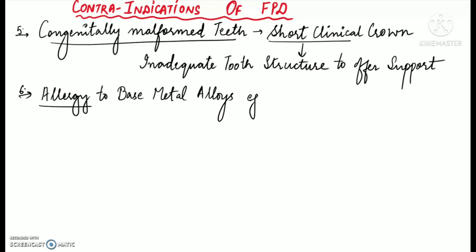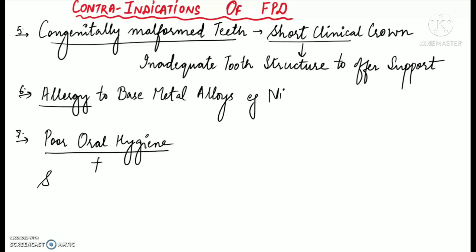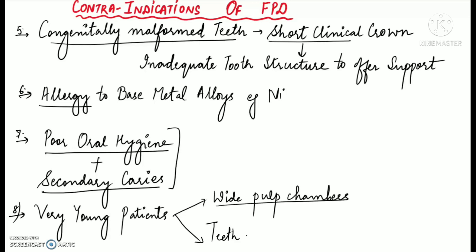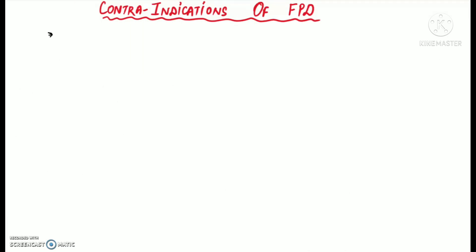Patients with poor oral hygiene and an increased risk for secondary caries are poor candidates for fixed partial denture. FPD is generally not indicated for very young patients as they have wide pulp chambers and teeth may not be fully erupted. FPD is also generally avoided in very old, mentally sensitive, and medically compromised patients who cannot cooperate or bear with the invasive treatment procedures.